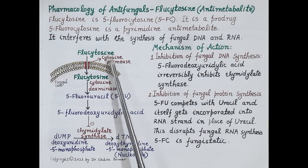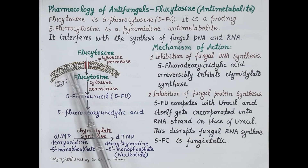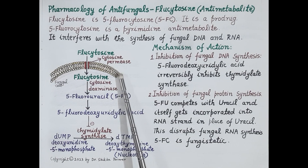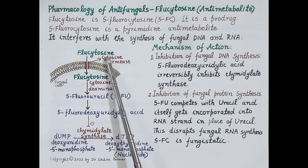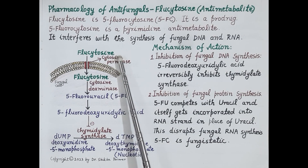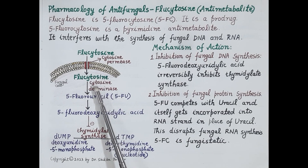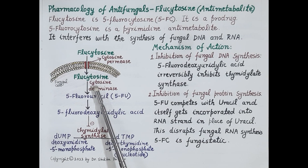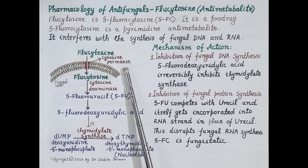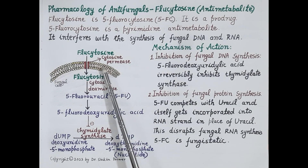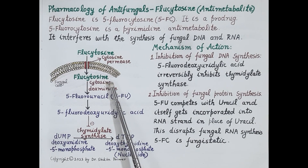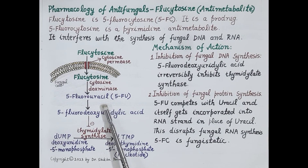Now let's understand the mechanism of action of flucytosine. This structure represents the fungal cell membrane. As already discussed, flucytosine is a prodrug. Flucytosine is transported inside the fungal cell by a fungal protein termed cytosine permease. Inside the fungal cell, flucytosine is converted into its active form — 5-fluorouracil — by an enzyme known as cytosine deaminase.